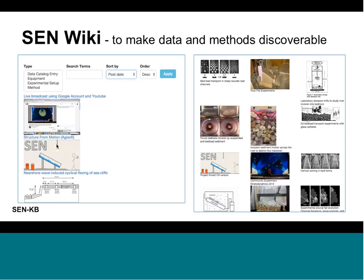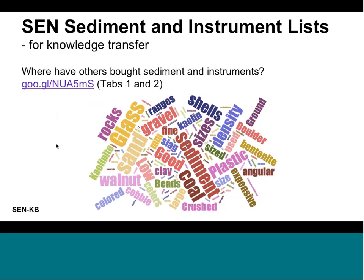We're also trying to gather combined knowledge that people accumulate once they do experiments. One thing we've done is compile a list of where people get sediment for their experiments. Once you've done it you know where to go, but for many beginning graduate students or people just starting with experiments, they really don't know at first. So this is a simple list gathering vendor names of places where people have bought sediment.